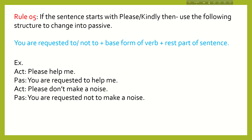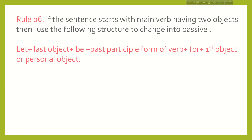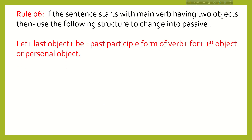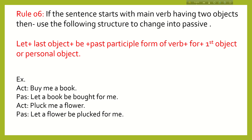If 'please' or 'kindly' is used at the end of the sentence, you have to use the same structure accordingly. Rule 6: If the sentence starts with the main verb having two objects, use the structure: Let + last object + be + past participle form of verb + for + first object. For example, 'Buy me a book.' Here we find two objects: 'me' and 'a book'. So: Let a book be bought for me. Another example: 'Pluck me a flower.' becomes 'Let a flower be plucked for me.'